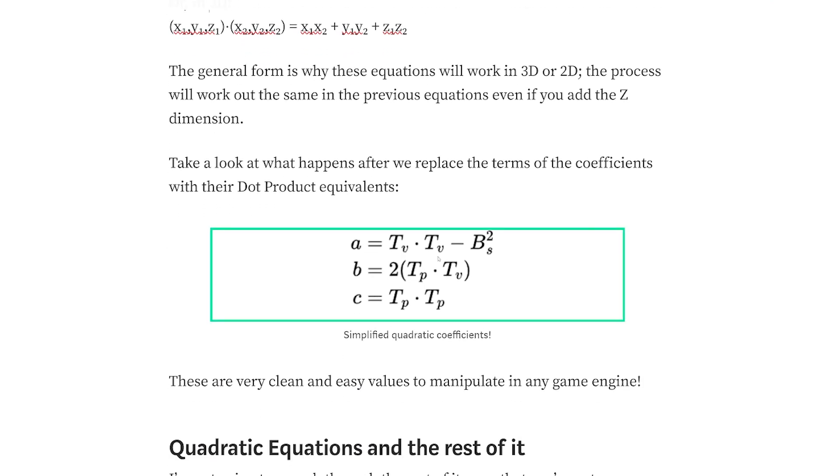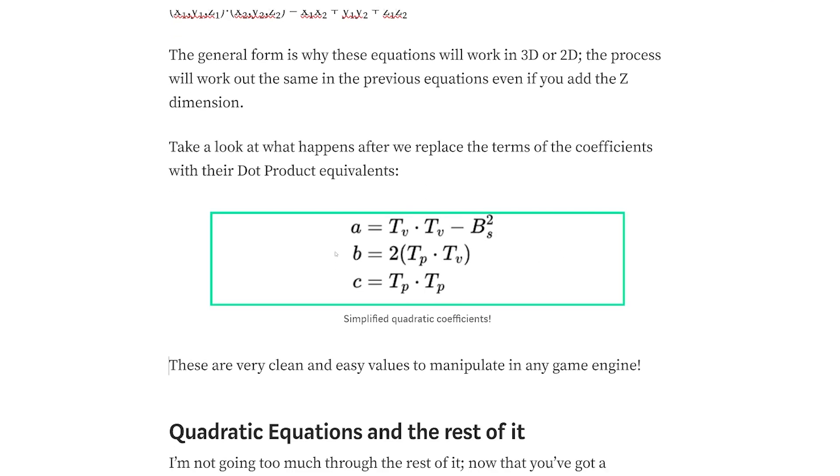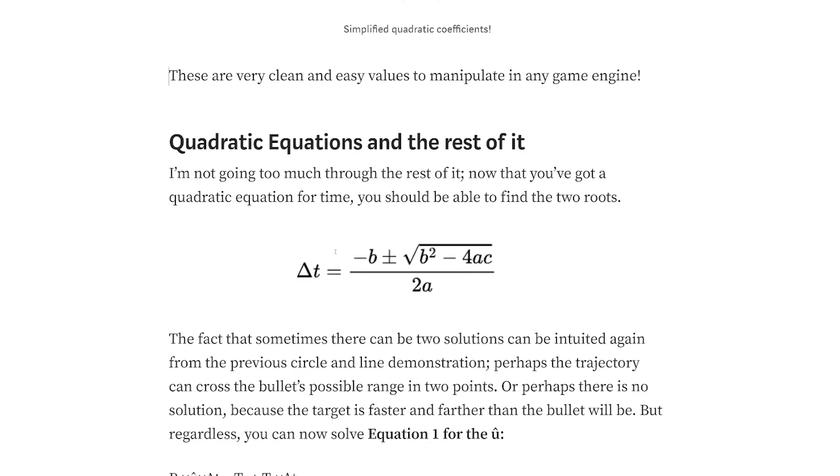So if we replace these original variables with their equivalent dot products, we have something that's going to be pretty simple for you to implement in your game engine. So now that you've got that, you're going to do the classic negative B plus or minus the square root of B squared minus 4AC all over 2A. And you're going to wind up with some solutions.